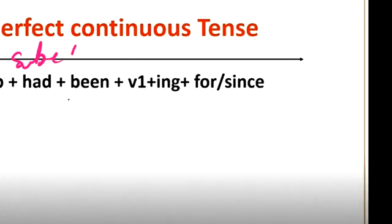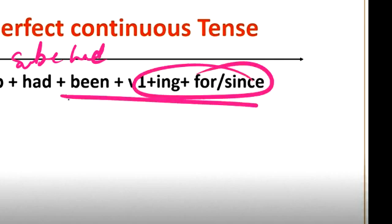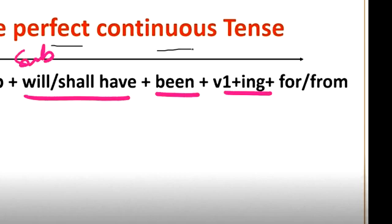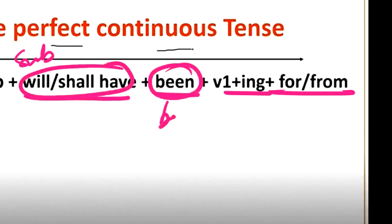Past perfect continuous tense: subject plus had plus been plus verb first form with -ing, for or since. Future perfect continuous tense: subject plus will or shall plus have plus been plus verb first form with -ing, for or since.